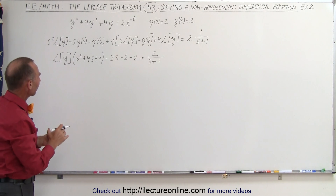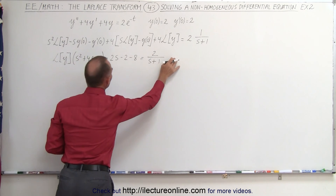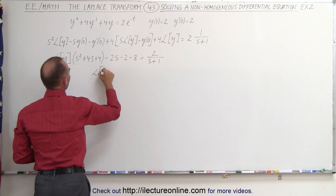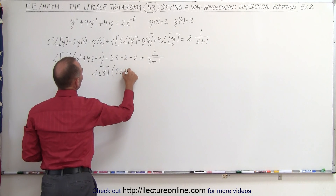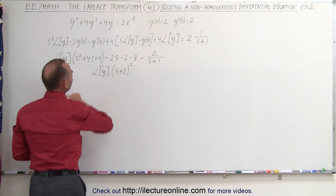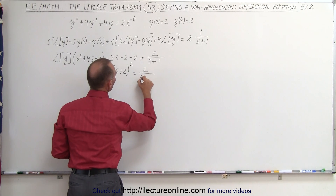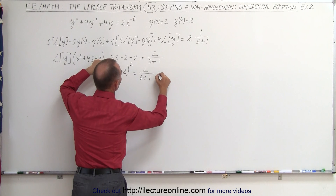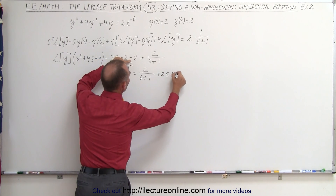What we can do next is factor the left side and move terms to the other side. We have the Laplace transform of y times s plus 2 squared — because that factors as s plus 2 squared — equals 2 over s plus 1. Then we move the remaining terms: minus 2s becomes plus 2s, and minus 10 becomes plus 10.